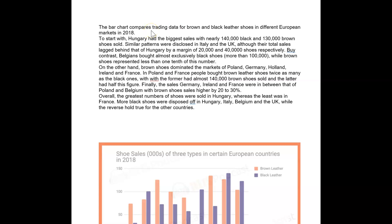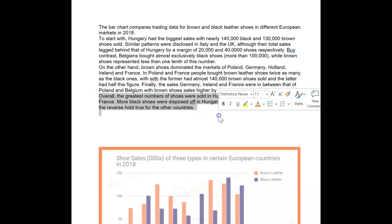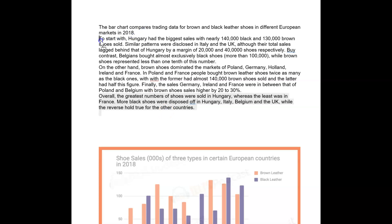The bar chart compares training data on good brown and black leather shoes. Now, I want the overall sentence. I'm going to move it up here because I think I said, for me, I prefer to have it here.